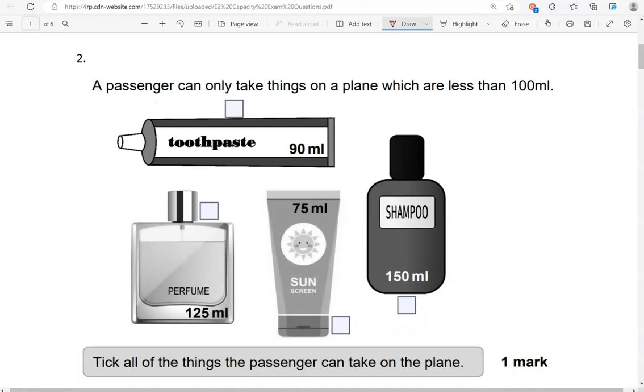A passenger can only take things on a plane which are less than 100 milliliters. Tick all the things the passenger can take on the plane. So, the toothpaste, that is 90 milliliters, which is less than 100. So we're going to tick that.